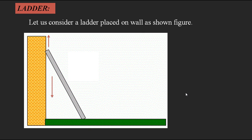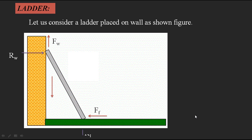I am calling this friction Fw — the friction between the wall and the ladder. Similarly, at the bottom, the lower end of the ladder tries to move away from the wall, so friction at the floor acts toward the wall, opposing that motion. I call this Ff — the friction between the floor and the ladder. Whenever friction acts, a normal reaction also acts on the ladder.